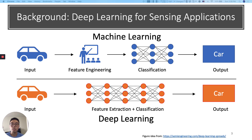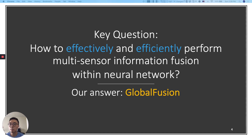Meanwhile, in many sensing applications, deep learning algorithms have shown non-trivial accuracy improvements compared to conventional feature engineering based machine learning methods. The feature extraction and classification are automatically conducted by the neural network. How to perform sensor fusion within the neural networks becomes a new challenge. The key question in this paper is how to effectively and efficiently perform multi-sensory information fusion within neural networks. Our answer is an end-to-end learning framework called Global Fusion.